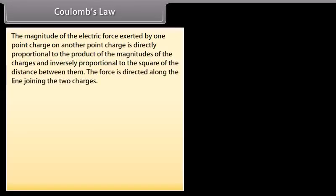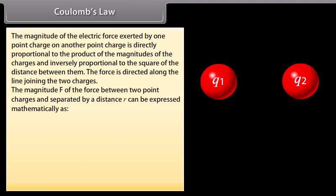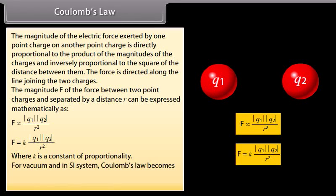Coulomb's law: The magnitude of the electric force exerted by one point charge on another point charge is directly proportional to the product of the magnitudes of the charges and inversely proportional to the square of the distance between them. The force is directed along the line joining the two charges. Mathematically, F = k|q₁||q₂|/r². In SI units for vacuum, Coulomb's law becomes F = (1/4πε₀) × |q₁||q₂|/r².